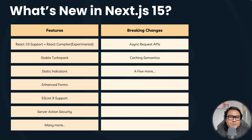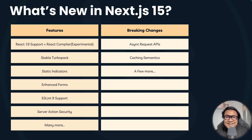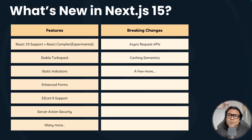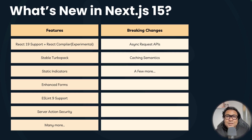At a high level, the features include React 19 support plus the React compiler experimental support in Next.js 15. We have a stable Turbo Pack so that your development becomes much faster. There are static indicators to show you which routes are static versus dynamic so you can think about optimizations. We also have an enhanced form — I have a separate video on that already. We'll also have ESLint 9 support, server action security, and many other features.